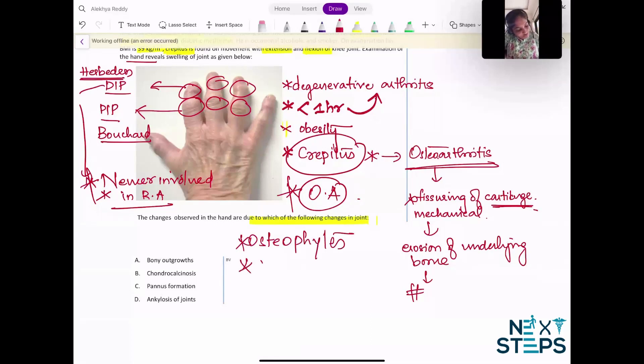Decreased joint space is there, effusion will be minimal, and fissuring will be present. Bony outgrowths yes. Chondrocalcinosis no - chondrocalcinosis is seen in calcium pyrophosphate crystal deposition, also known as pseudogout.